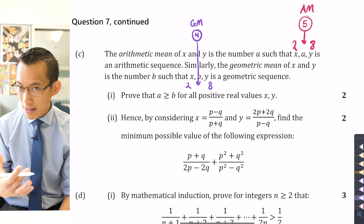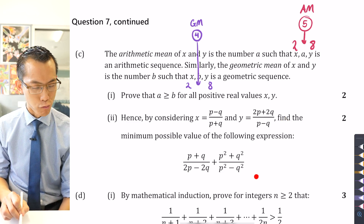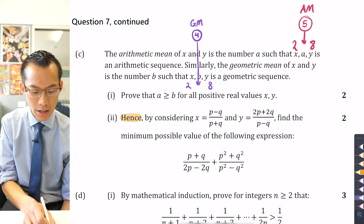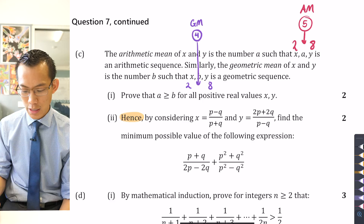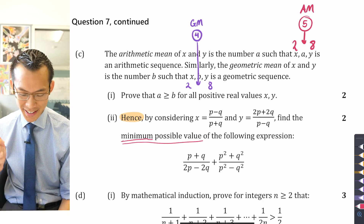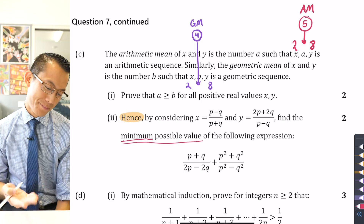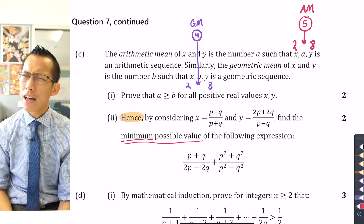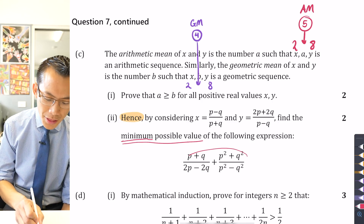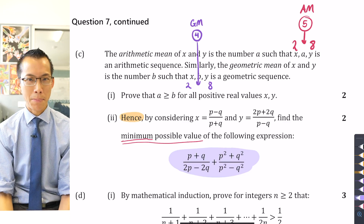That was part one. For part two, the question says 'hence' — meaning you must use the AM-GM result — and asks you to find the minimum possible value of a complex-looking expression by letting x and y take on specified values. Note that 'hence' tells you to use the AM-GM inequality, not calculus, even though the word 'minimum' might instinctively make you think of differentiation and stationary points.